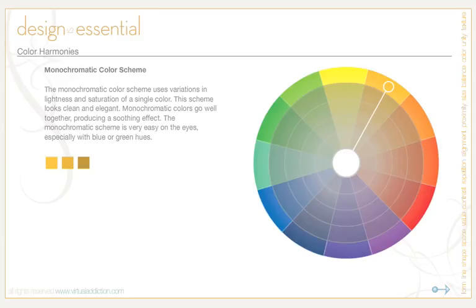The first color scheme is the monochromatic color scheme, which uses variations in lightness and saturation of a single color. This scheme is very clean and elegant. Monochromatic colors always go well together, producing a soothing effect, and it's very easy on the eyes, especially with blue or green hues. You can use it to establish an overall mood, and the primary color can be integrated with neutral colors such as black, white, or gray. Pros include that it's easy to manage and always looks balanced and visually appealing.